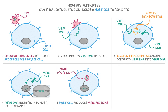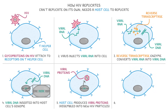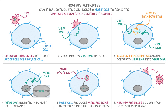These viral proteins that are produced are then assembled into new HIV particles inside the cell. Lastly, these new HIV particles bud off from the host cell membrane, ready to infect other cells. This replication process damages and eventually destroys the T helper cells, weakening the immune system over time.